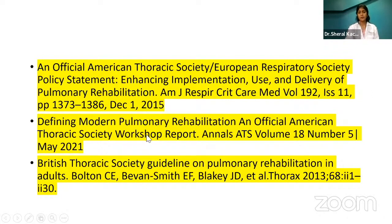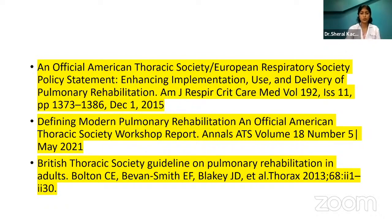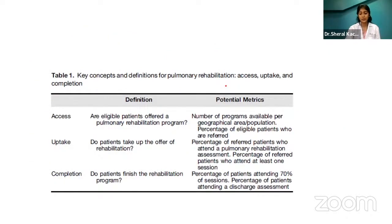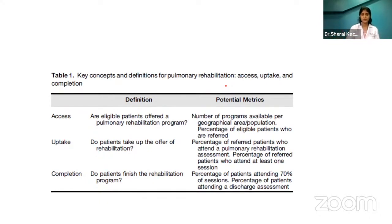I came across this article 'Defining Pulmonary Rehabilitation' — an official American Thoracic Society workshop article from May 2021. They mention recent current scenarios: you need to know about uptake and completion. It's not just about the patient coming for two sessions and going. How much are they compliant to the program is really important. Do patients finish the rehab program? Who is eligible? You need to think all these concepts when working with patients.